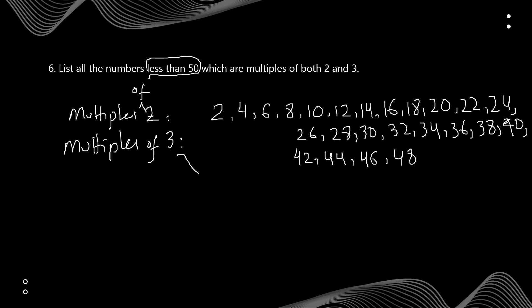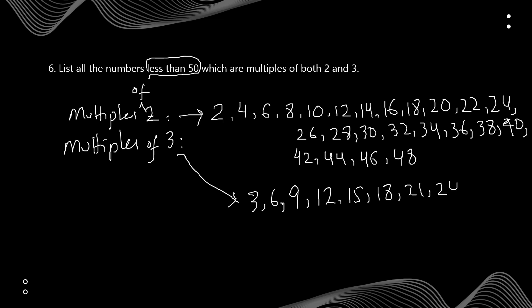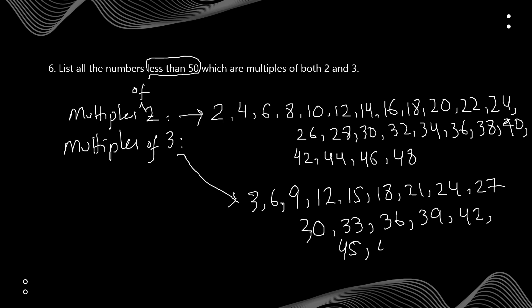Now let's write the multiples of 3. The table of 3 is also quite easy: 3, 6, 9, 12, 15, 18, 21, 24, 27, 30, 33, 36, 39, 42, 45, 48. And that's it.